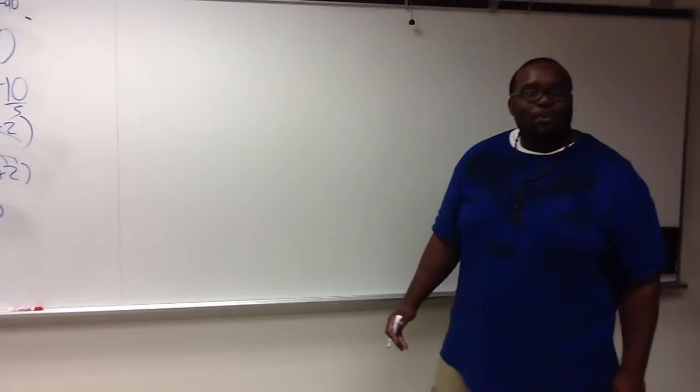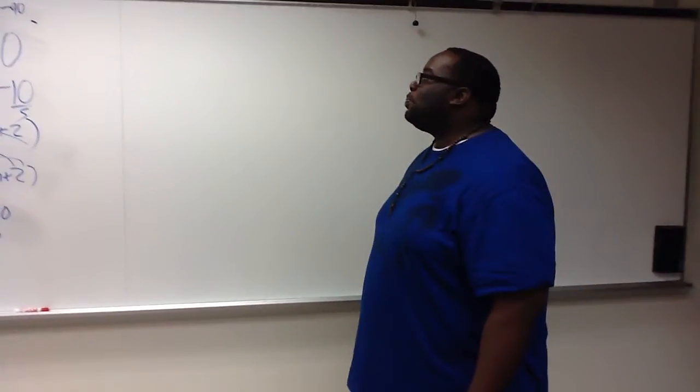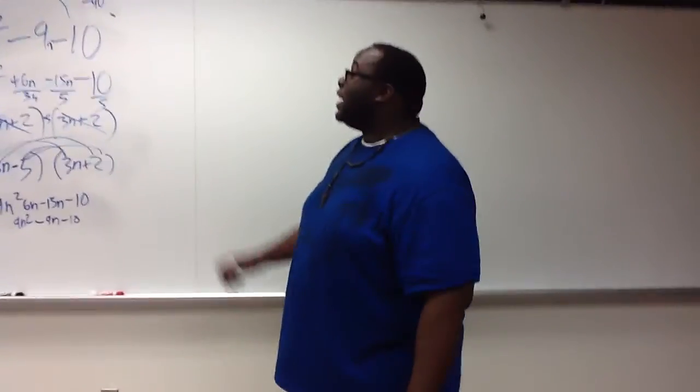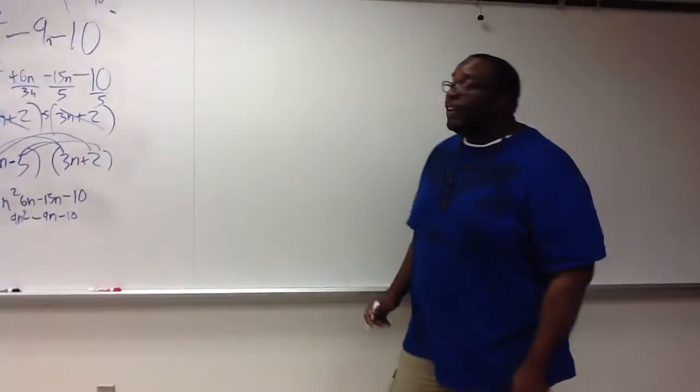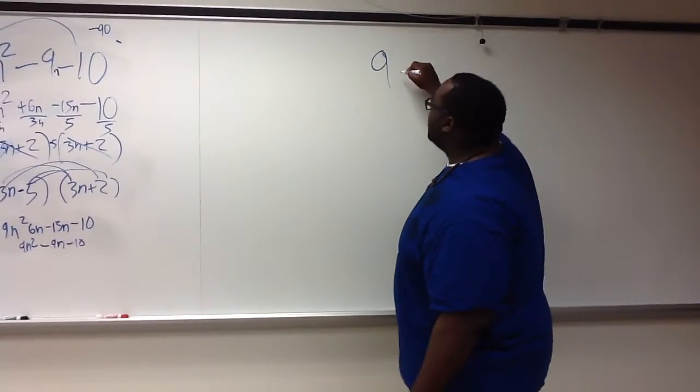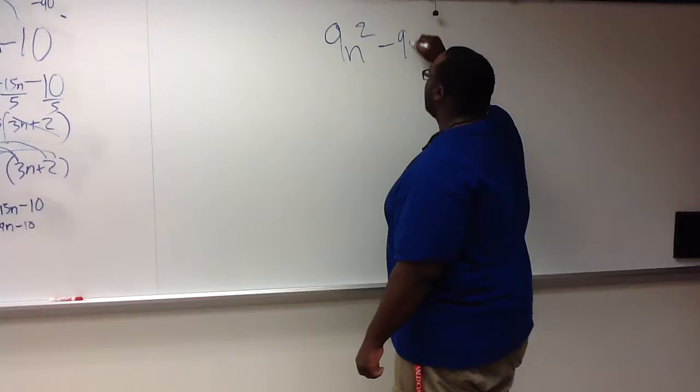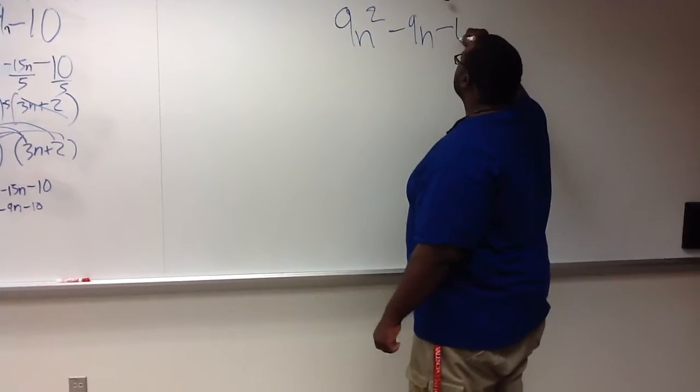I'm about to do an algebraic expression here. It's an expression, but we can't solve it because it doesn't equal to anything. So what we have here is 9n squared minus 9n minus 10.